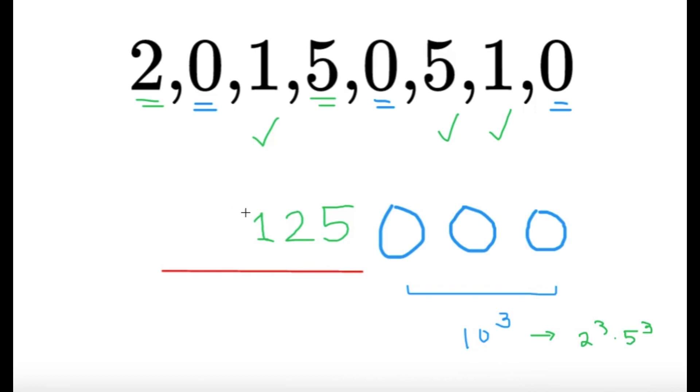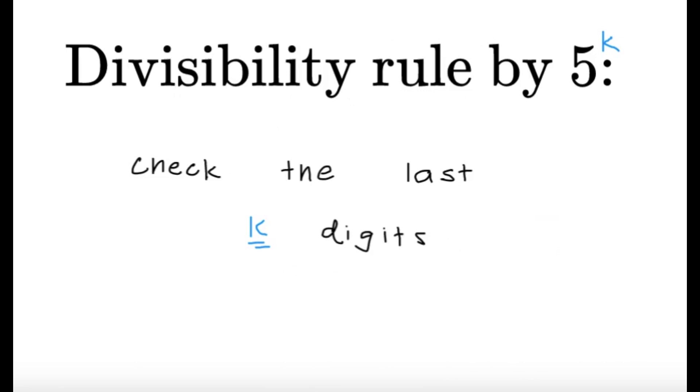We just have to check the last 6 digits in this case. By the way, if you guys didn't know, we have a divisibility rule by 5 raised to k. That is to check the last k digits. If it's divisibility by 5, then we just check the last 1 digit. Well, we check if it's either 5 or 0.